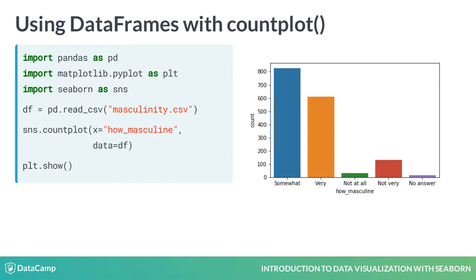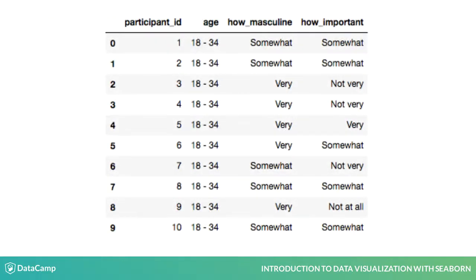Let's pause for an important note here. Seaborn works great with Pandas DataFrames, but only if the DataFrame is tidy. Tidy data means that each observation has its own row, and each variable has its own column. The Masculinity DataFrame shown here is tidy, because each row is a survey response, with one answer to each survey question in each column. Making a countplot with the How Masculine column works just like passing in a list of that column's values.